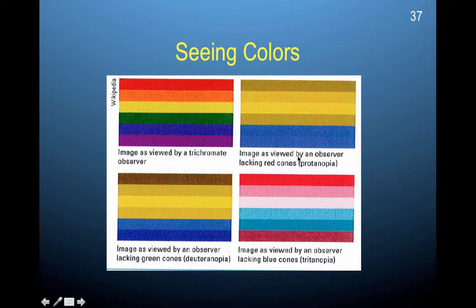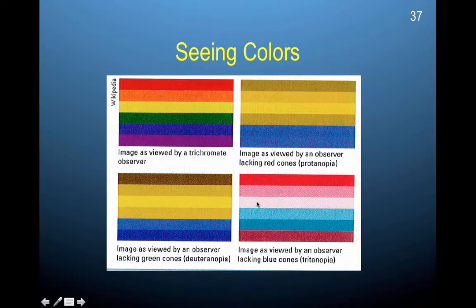Here's this image as viewed by an observer lacking red cones, which is known as protanopia, and so they can't see the red. Here's an observer lacking green cones, which is deuteranopia, and they can't see any green.